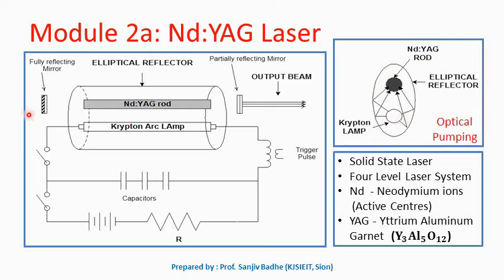A resonant cavity is formed with the help of two mirrors, one of which is a fully reflecting mirror and the other is a partially reflecting mirror. The laser beam can be obtained from the partially reflecting mirror. The capacitor, power supply, and trigger pulse are the things necessary for running the krypton lamp. This is the simple construction of the Nd:YAG laser.